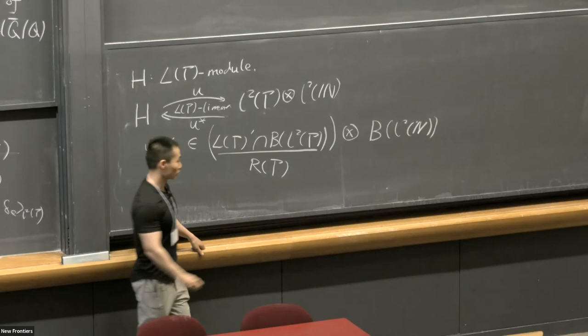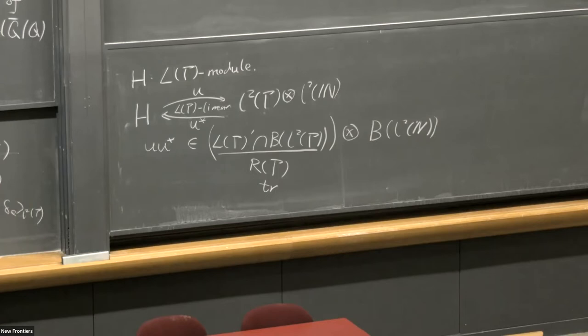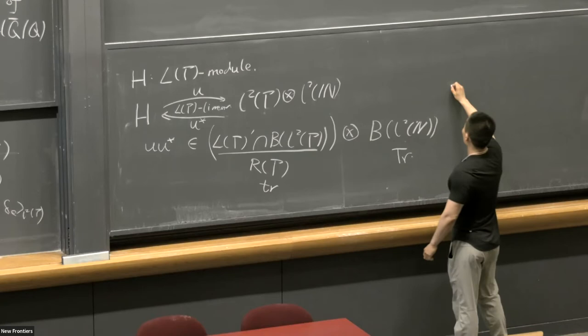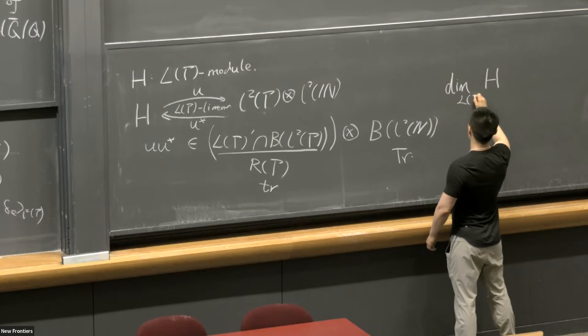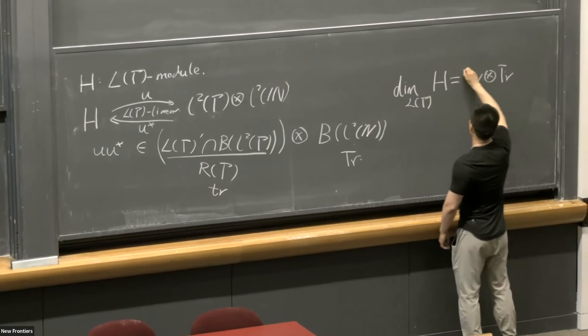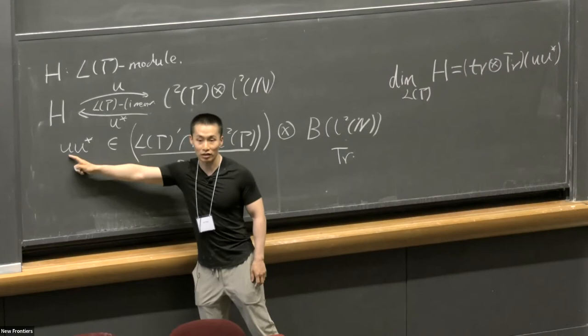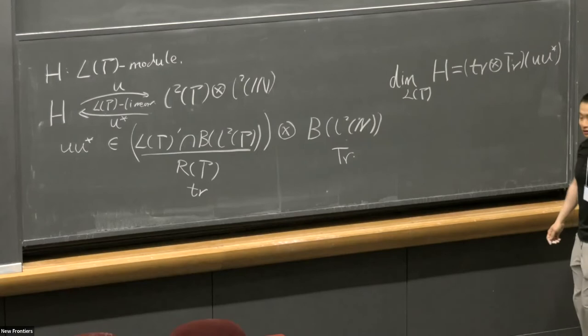L(gamma)' is from the right regular representation, so there is a trace—just the trace I gave here—it can also be defined on the right regular representation. On this algebra, we have a natural trace. The von Neumann dimension of H over this algebra is defined to be the tensor product of these two traces of U U star. You can show that this is well-defined—it doesn't depend on the choice of the partial isometry.